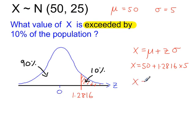So x is equal to 56.4. So this value of x is exceeded by 10% of the population. So 10% of the population is greater than this value of x.